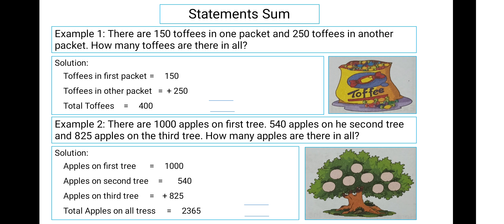In Example 2: there are 1000 apples on the first tree, 540 apples on the second tree, and 825 apples on the third tree. How many apples are there in all? On the first tree we have 1000 apples, on the second tree 540 apples, and on the third tree 825 apples. We sum up all three to get the total. When we add all three numbers, the total number of apples is 2365.